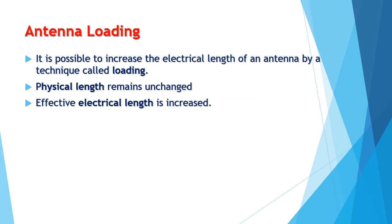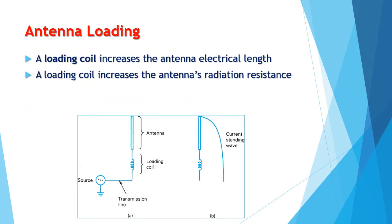Antenna loading. It is possible to increase the electrical length of an antenna by a technique called loading. When an antenna is loaded, its physical length remains unchanged, although its effective electrical length is increased. A loading coil is a coil added in series with a dipole antenna, effectively increasing the antenna electrical length. A loading coil effectively increases the radiation resistance of the antenna by approximately 5 ohms.